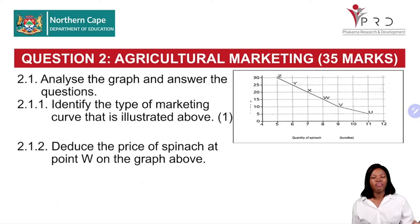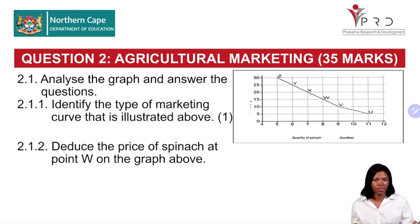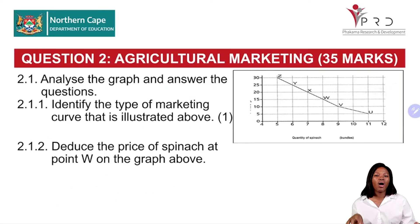Now let us look at Question 2 — Agricultural Marketing, which is out of 35 marks. In this question, you will be provided with different graphs, descriptions, or paragraphs to read. Here there is a graph — you analyze the graph and answer the questions. Remember, all your answers are in the graph.